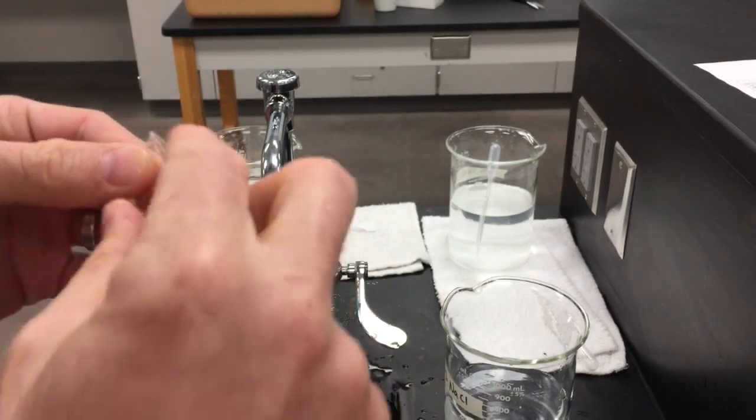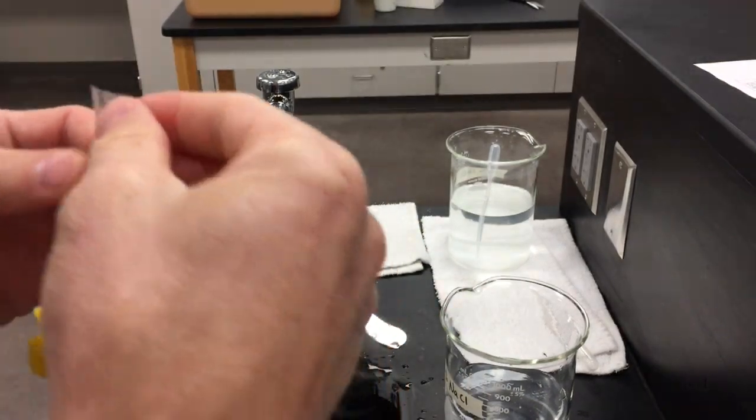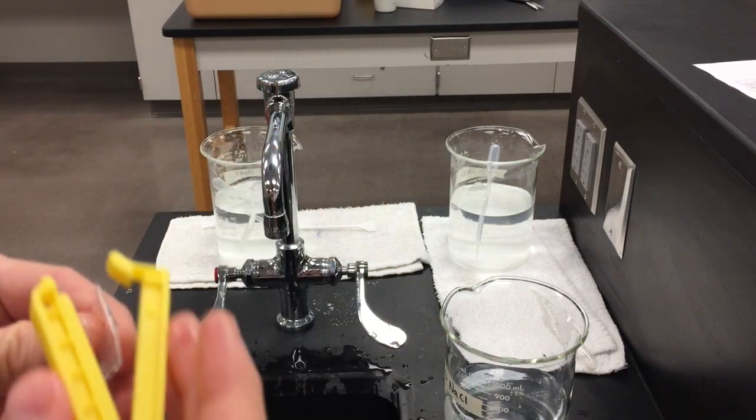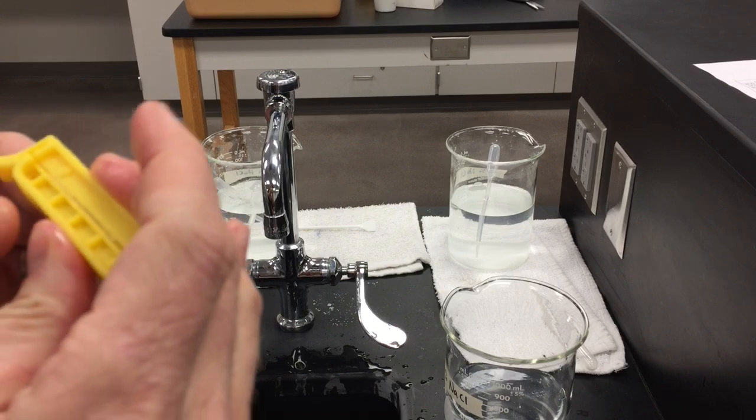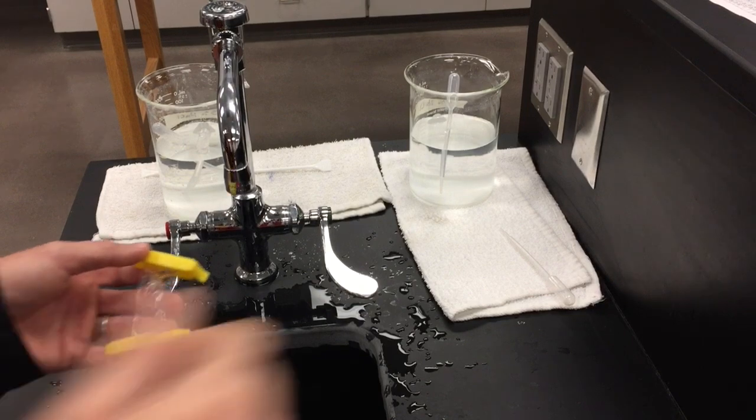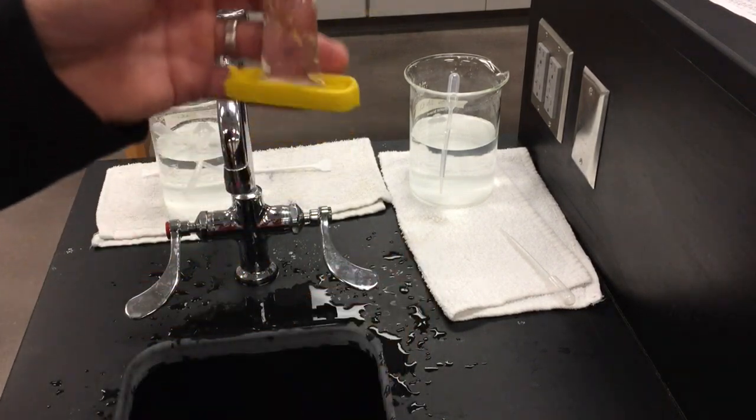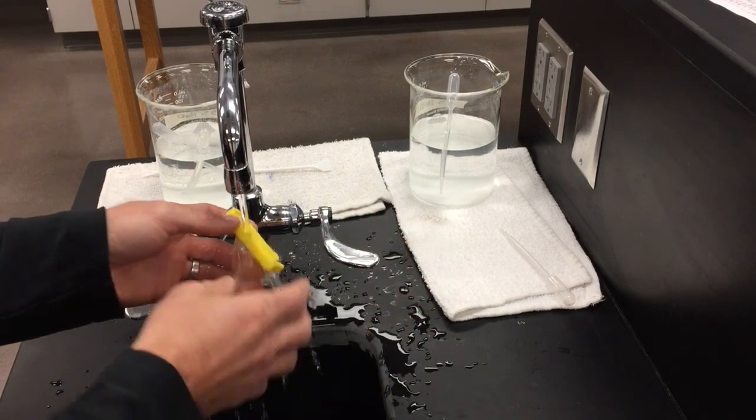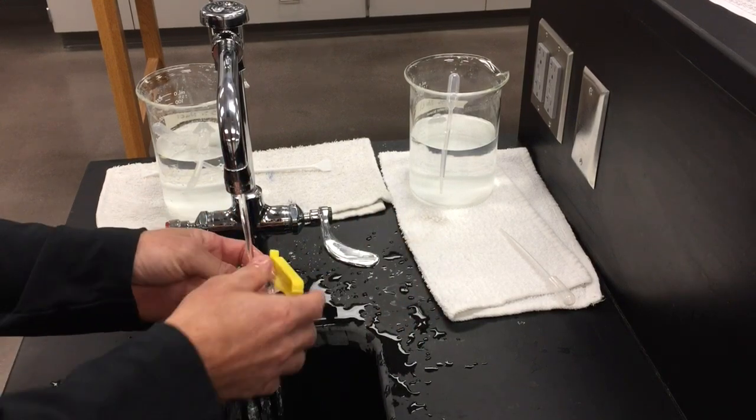I'm going to fold over the end and clamp that end up as well. If there's any bubbles in there, try to get the bubbles out and then clamp the end shut. Once you've added the salt water to the dialysis tubing, rinse off the tubing for a while to get any excess salt water off the outside of the tubing.